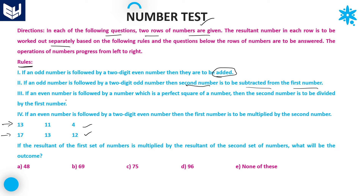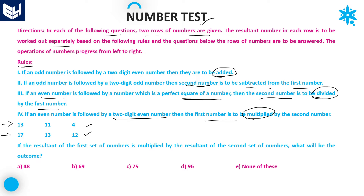Rule 3: if an even number is followed by a number which is a perfect square, then the second number is divided by the first number. Rule 4: if an even number is followed by a two-digit even number, then the first number is multiplied by the second number. These are the four rules given in this question.